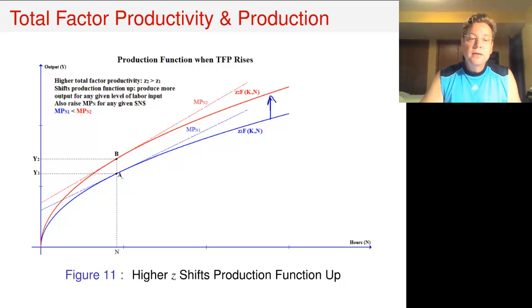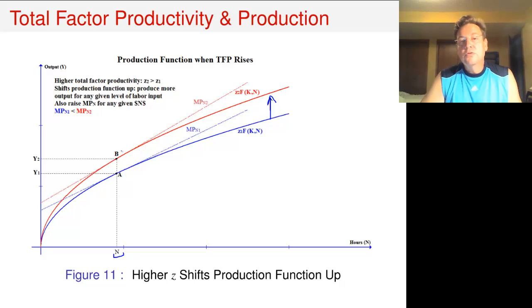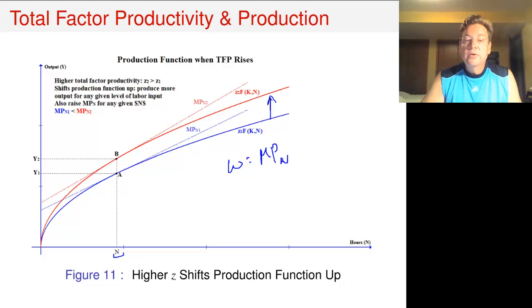Here's the picture that shows the shift from the blue to the red production function. At any given level of N — hours worked — we now have something more steeply sloped, and therefore the marginal product is going to be higher. We know that in equilibrium the wage has to equal the marginal product of labor.